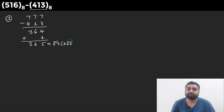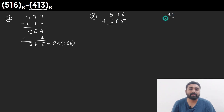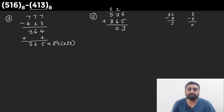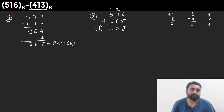In the second step, we add 516 and the 8's complement 365. Working through the digits: 6 plus 5 = 11, subtract 8 gives 3 with carry 1. 1 plus 6 plus 1 (carry) = 8, subtract 8 gives 0 with carry 1. 5 plus 3 plus 1 (carry) = 9, subtract 8 gives 1 with carry 1.